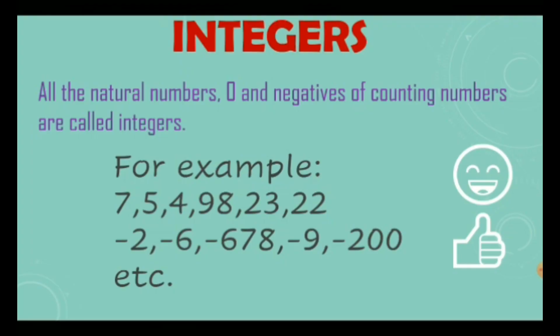Now let's go further to the main topic which is integers. All the natural numbers, 0 and the negative of counting numbers are called integers. In short, we can say that integers is the combination of whole numbers and the negatives.